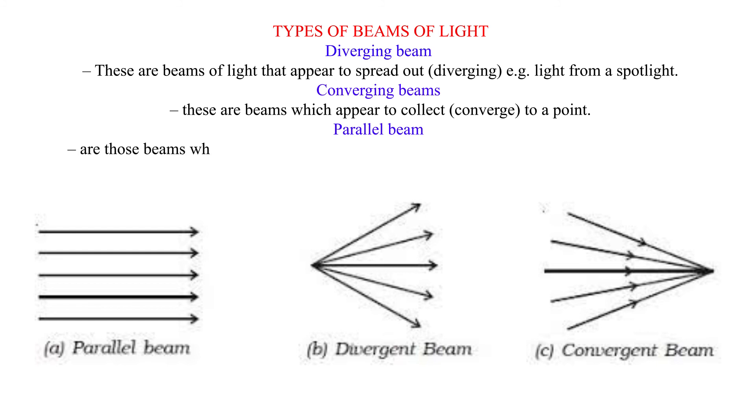Parallel Beam: These are beams which appear to be perfectly parallel to each other, for example, a beam of light from the sun reaching the earth's surface.